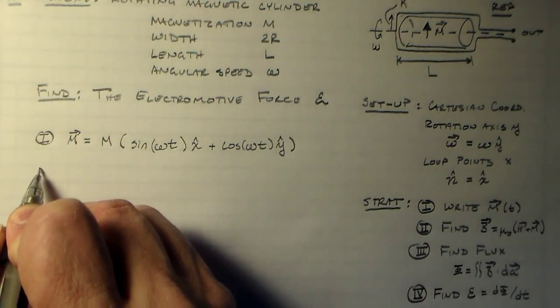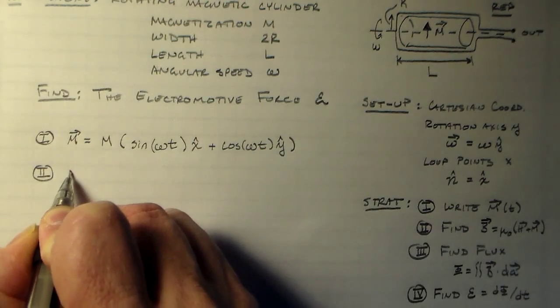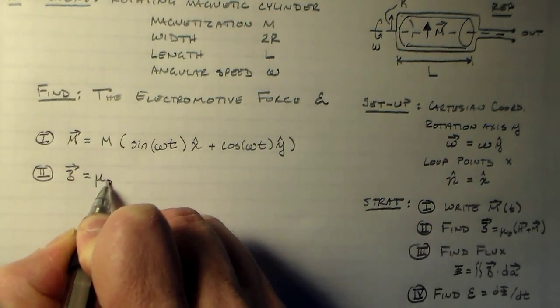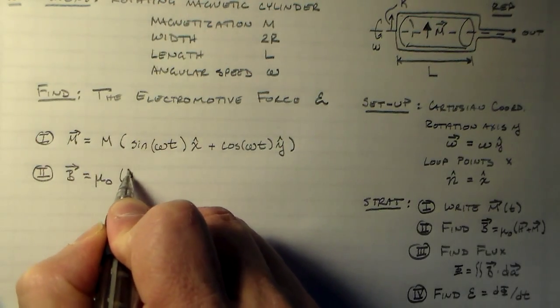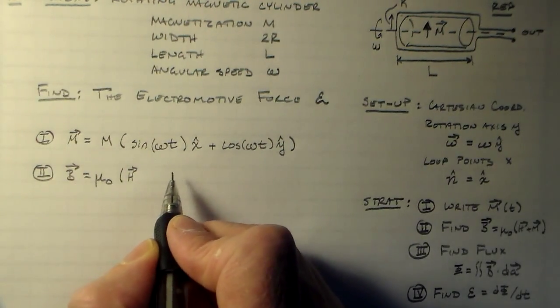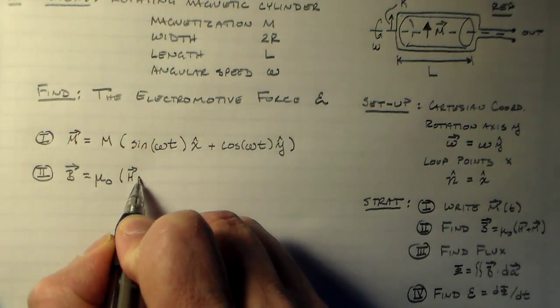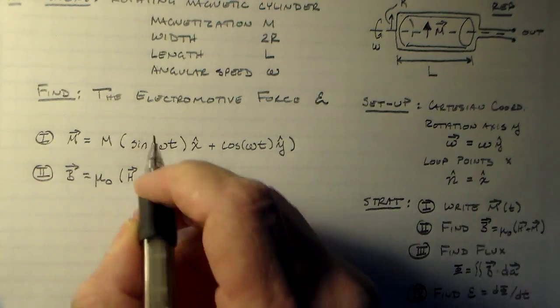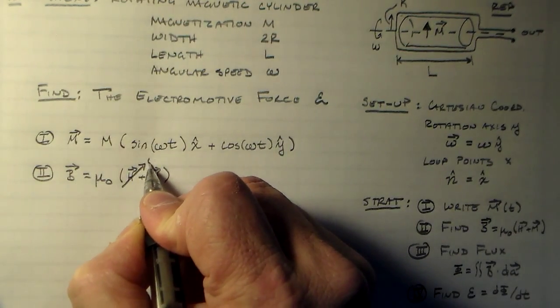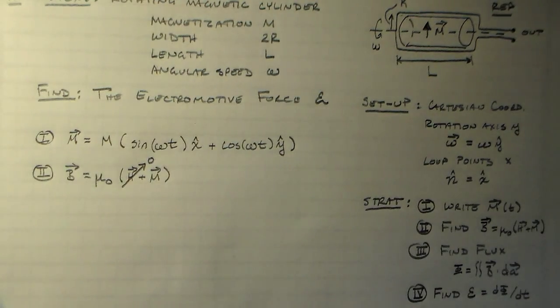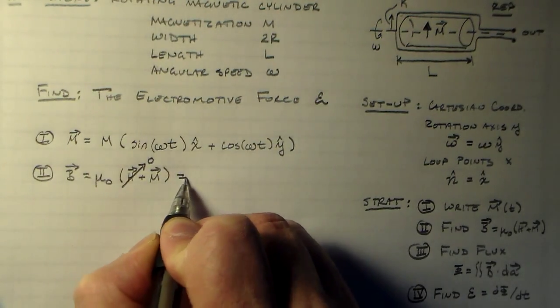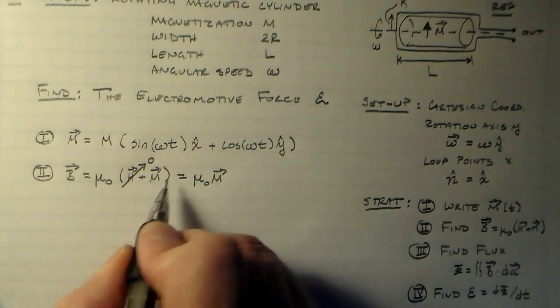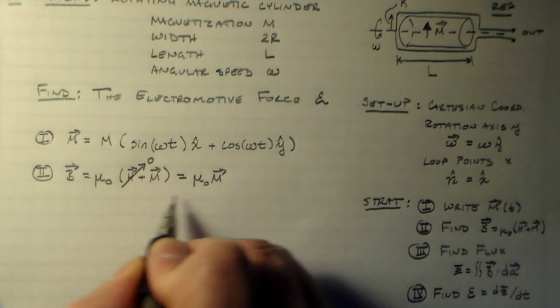Then we can use that to find the magnetic field b. So b is equal to the permeability of free space times the h field, which is basically the field from everything else in the world except our magnet, plus the magnetization of the magnet. Right now, we're looking at this in isolation. So the h field is zero. So b is just going to be mu-naught m.